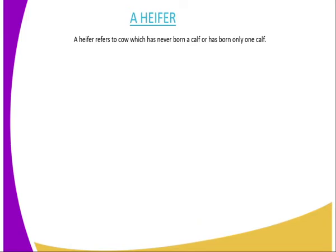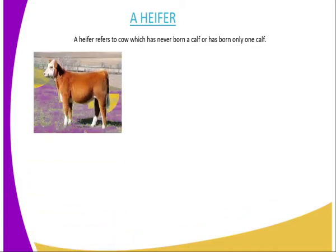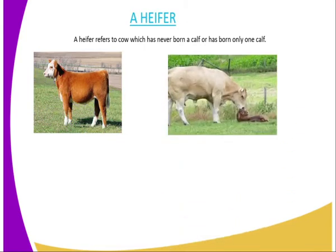What is a heifer? A heifer is a cow which has never borne a calf, or has borne only one calf. That is what we refer to as a heifer, and a heifer is one which is normally raised so that it can act as a replacement stock in future. You can see an example of a heifer there — there is a young female calf, that is what we refer to as a heifer.